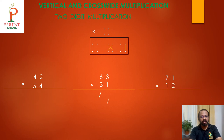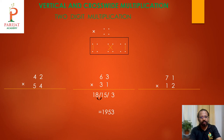Here we go with more examples: 63 times 31. Last column: 3 ones are 3. Middle cross-connect: 3 threes are 9, 6 ones are 6, so 9 plus 6 is 15. First column: 6 threes are 18. With carry-over, the answer is 1953.